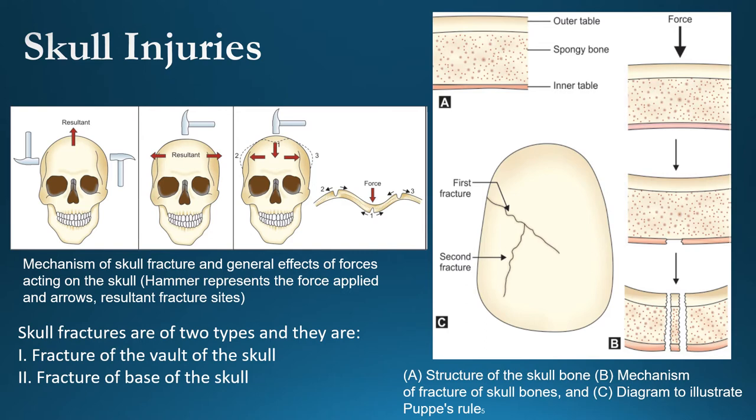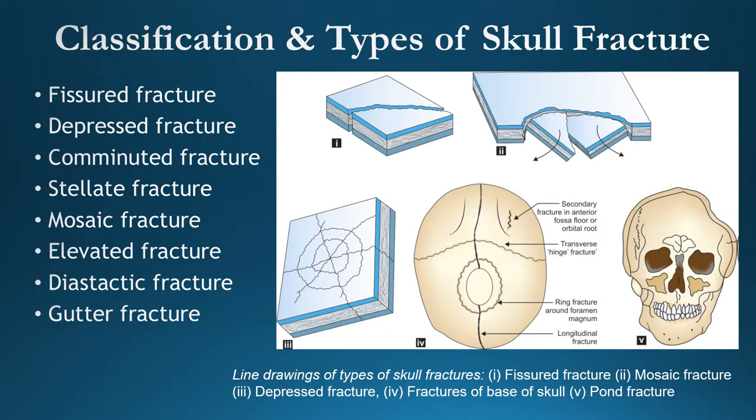Classification of skull fractures includes: fissured fracture (linear fracture involving both outer and inner table, also called crack fracture); when occurring around the foramen magnum it is called a ring fracture. Ring fractures are difficult to identify in X-rays in a living person but can be detected with CT or MRI scanning when they cross layers.